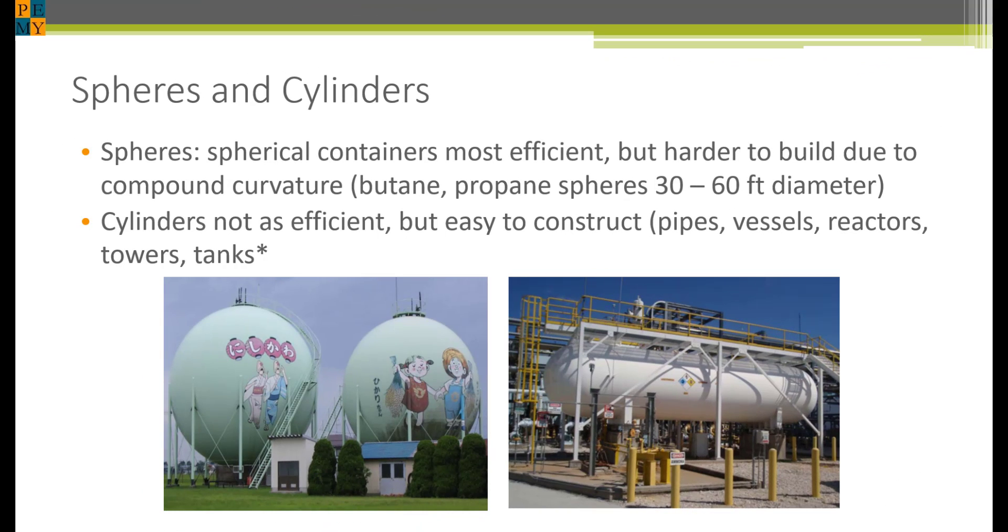As you might guess, spheres are the most efficient storage in terms of the amount of steel required to contain a given pressure at a given diameter. But they are harder to construct because fabricating them involves compound curvature, which means there are two directions of curvature.